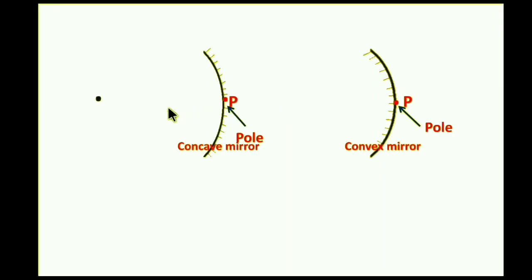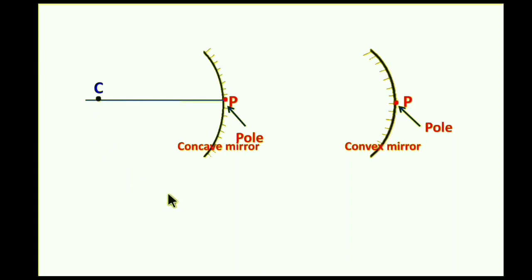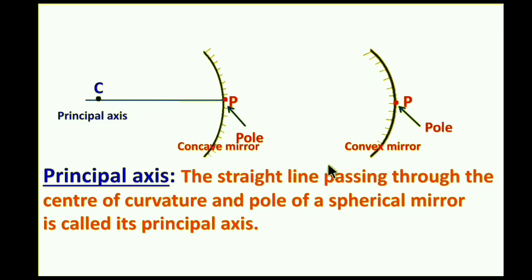The next important term is principal axis. The straight line passing through the center of curvature C and the pole P of a spherical mirror is called the principal axis. An imaginary line passing through C to P is the principal axis — this applies to both concave and convex mirrors.